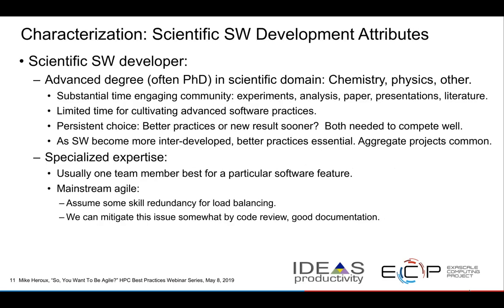Scientific software development attributes include: many of us have advanced degrees, often a PhD in a scientific domain. We spend a significant amount of time engaging in the community — getting a PhD is the beginning of your research career, and you spend time keeping your stature in the community fresh. We typically have little time for cultivating advanced software practices if we're also serious about being an expert in our domain. So we have this persistent choice: better practices or newer results sooner.